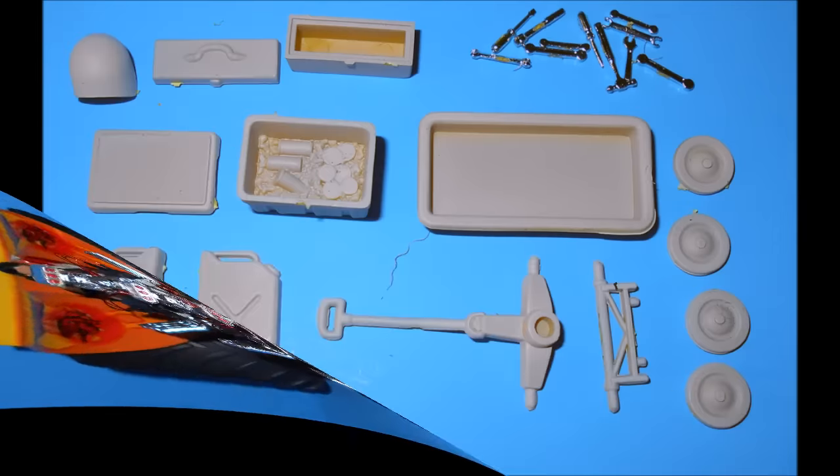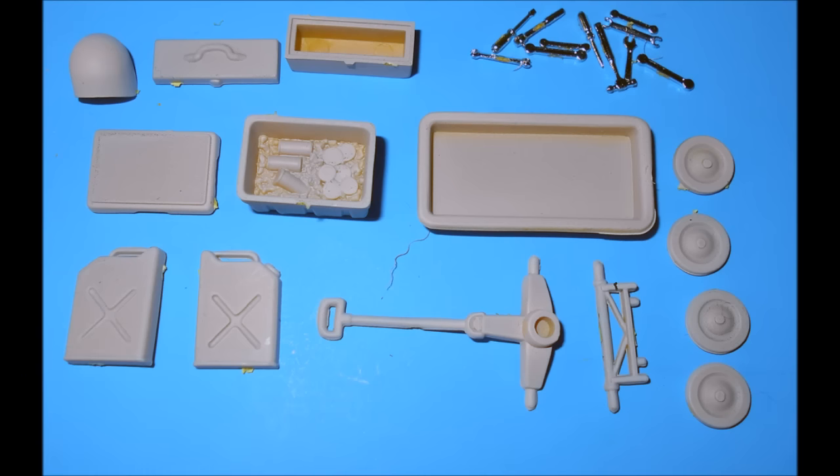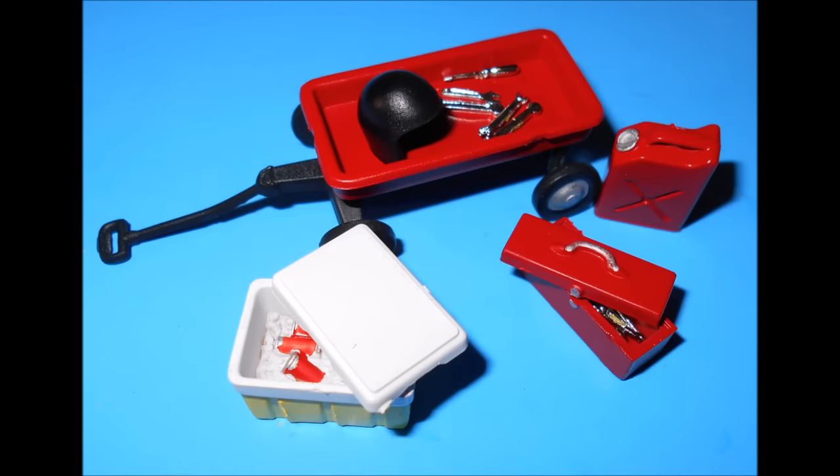This kit comes with some neat little extras that you can paint and add to the build in a diorama type setting. You get a tool box with some chrome tools, a little cooler full of ice and some drinks, and a gas tank, and an extra helmet, and a wagon to pull it all in. But I paint these just the way I felt so you can do whatever you'd like as well.